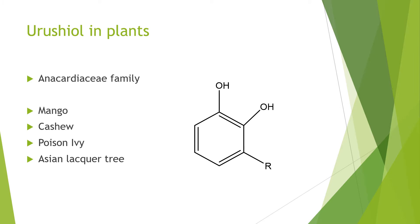So which plants actually contain urushiol? It is found in the Anacardiaceae family — excuse my pronunciation — and it's found in the vascular system of all these plants, which include the mango tree, cashew, poison ivy, and the Asian lacquer tree. They all have a similar structure shown on the right, with a catechol ring and an R-group.